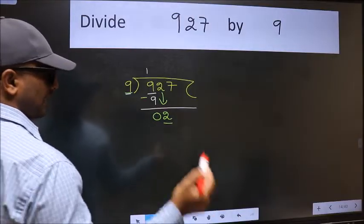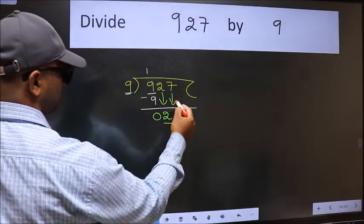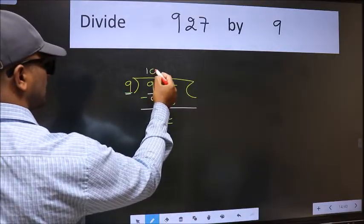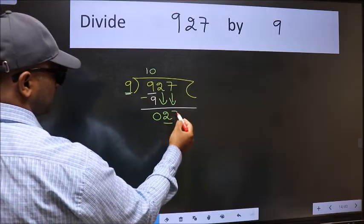So, we should bring down the second number and the rule to bring down the second number is we should put 0 here. Then only we can bring this number down.